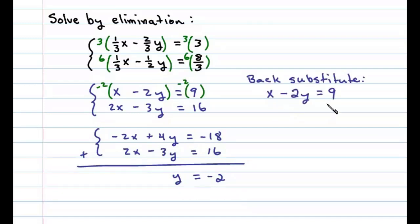Now when we back substitute, we can choose any one of the original equations or their equivalence. In this case, I chose X minus 2Y equals 9. We'll substitute into that equation to find X.